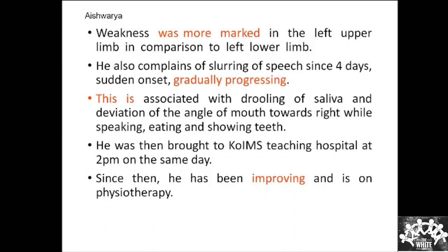He also complained of slurring of speech since four days — sudden onset and gradually progressing. When taking neurological history, the very important things are: onset, progression, and associated symptoms — essential to localize the lesion. The slurring is associated with drooling of saliva and deviation of the angle of mouth towards the right, seen while speaking, eating, and showing teeth. Deviation of the angle of mouth to the right indicates left-sided facial muscle weakness — the facial nerve is involved.